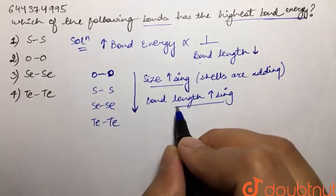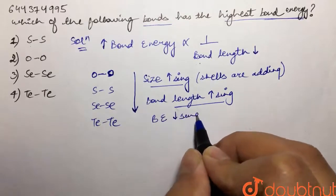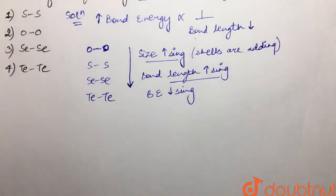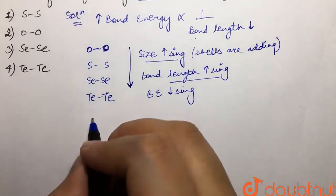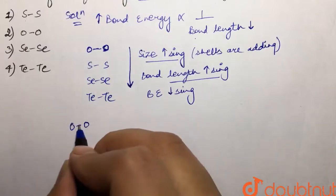And because this is inversely proportional to bond energy, the bond energy would keep on decreasing. So according to this, the order that we can have is that oxygen-oxygen would have the highest bond energy.